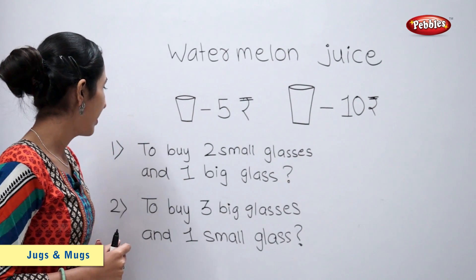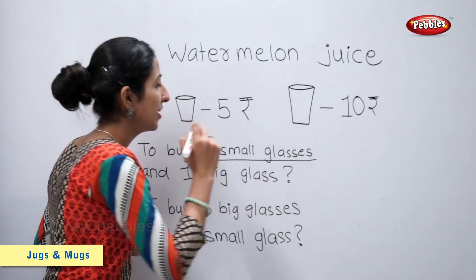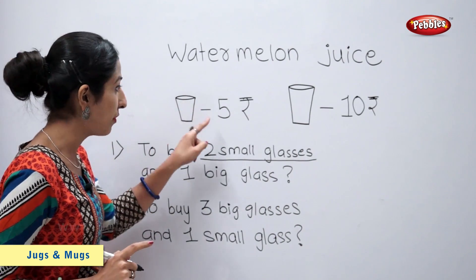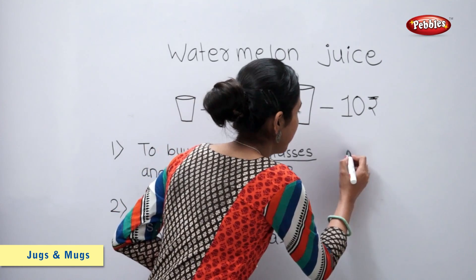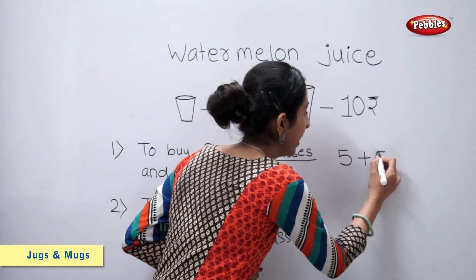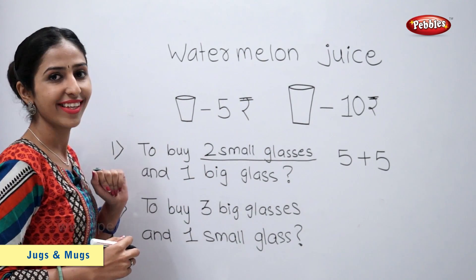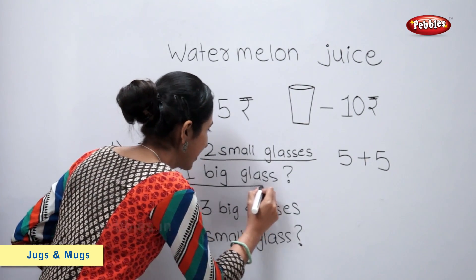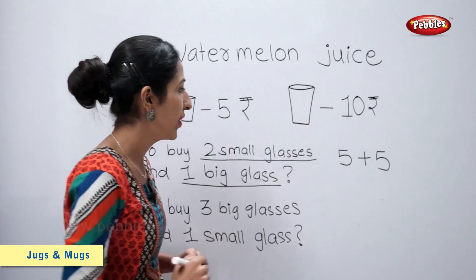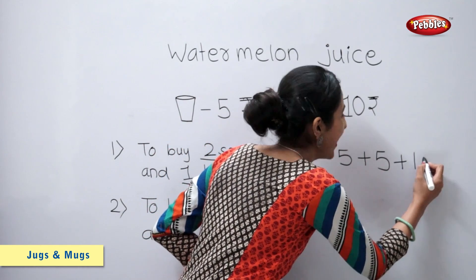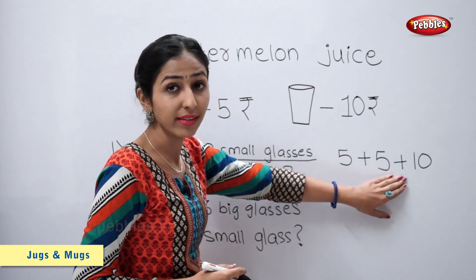Let's find out. To buy 2 small glasses: 1 small glass costs rupees 5, and we need to buy 2 glasses, so 5 plus 5. And 1 big glass — 1 big glass costs rupees 10. So, 5 plus 5 plus 10.